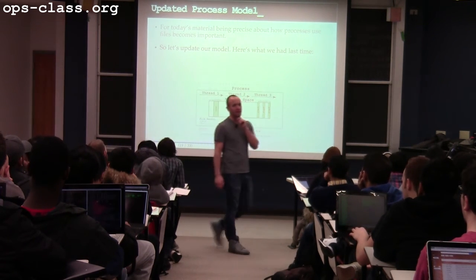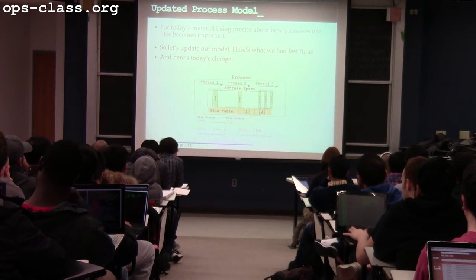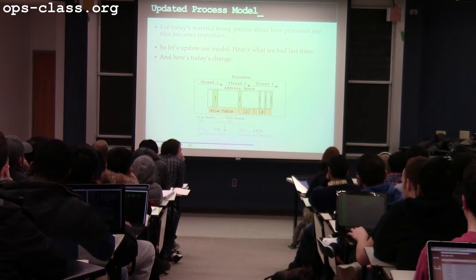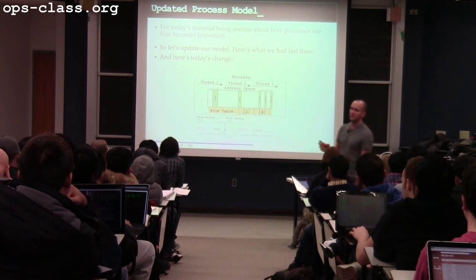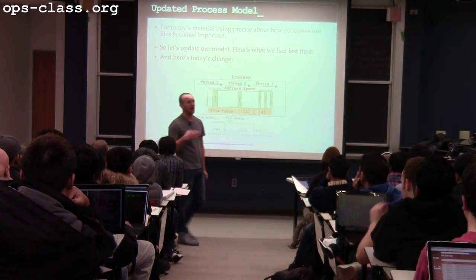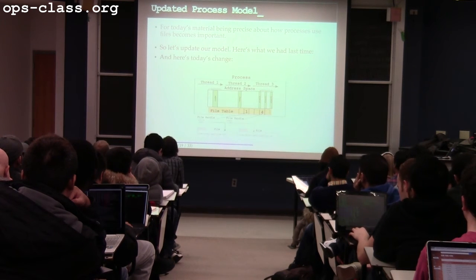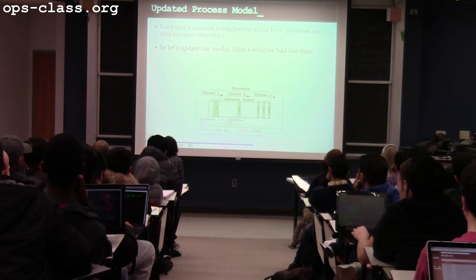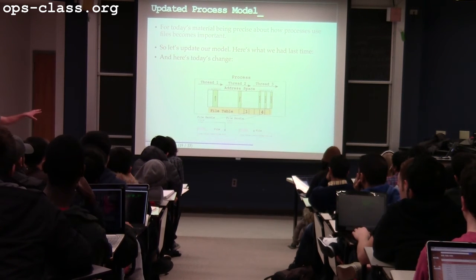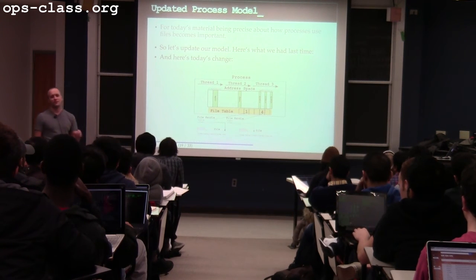Let's update our process model. Currently, processes have some references to open files. The actual way this works is a little more complicated — and this is one of the first cool system design principles we're going to learn. In the actual model, the process has a reference to something called a file handle, which itself has a reference to a file — rather than a direct reference to the file.